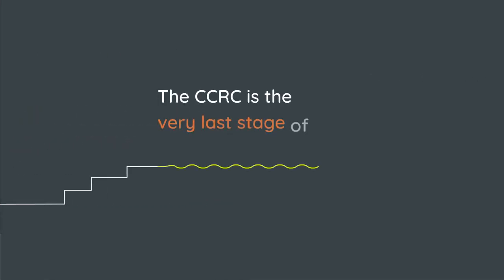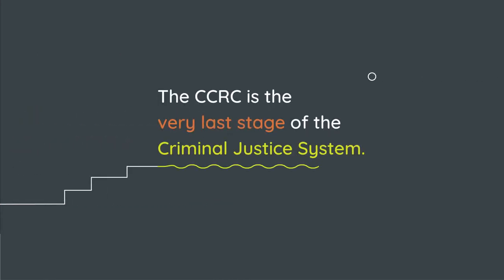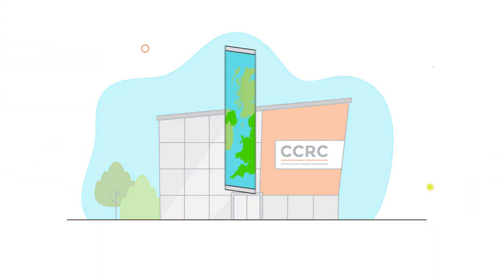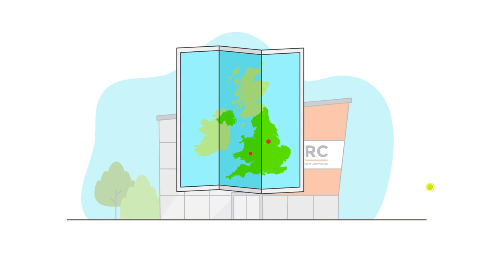The CCRC is the very last stage of the criminal justice system. Anyone who believes they've been wrongly convicted of a criminal offence in England, Wales or Northern Ireland can ask the CCRC to review their case. But you usually need to appeal to the court before applying to us.